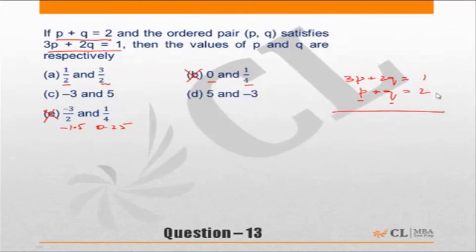B and E are incorrect because they don't satisfy p plus q equals 2. In the remaining choices, let us see which one satisfies this equation. Any choice which does not satisfy this equation has to be incorrect.